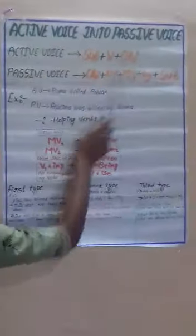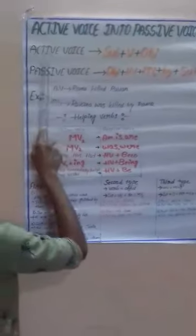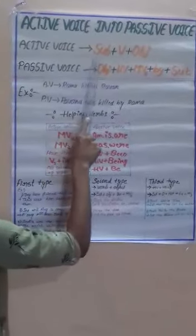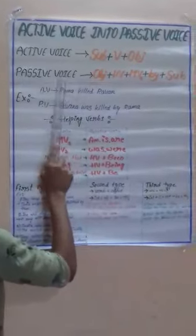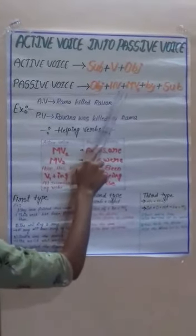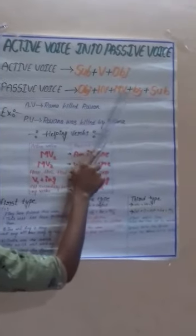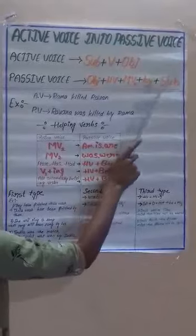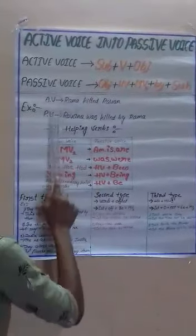Active into Passive structure. Active is equal to subject plus verb plus object. Passive: object plus helping verb plus main verb third form plus by plus subject.